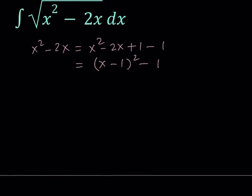If you do the replacement under the radical you're going to have the square root of x minus 1 squared minus 1, dx.